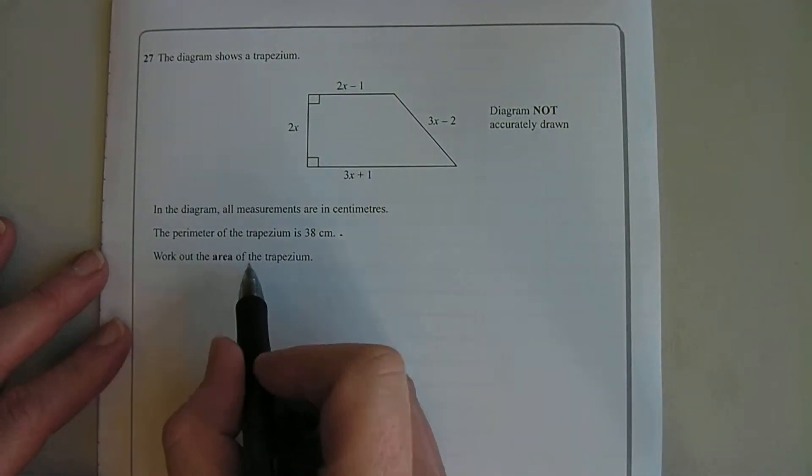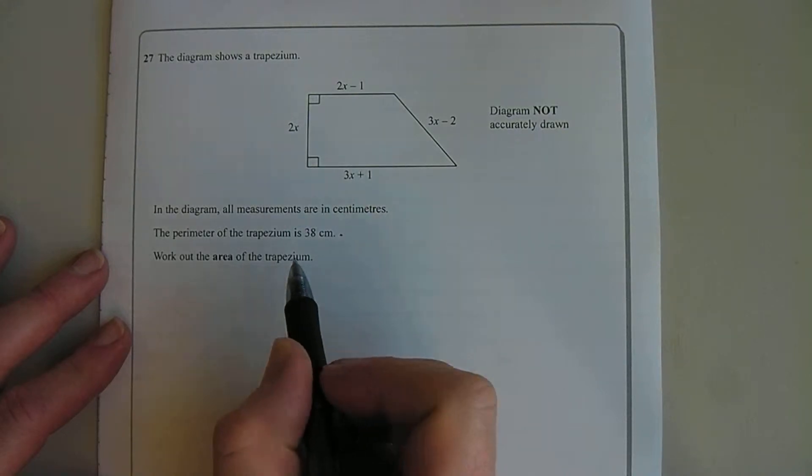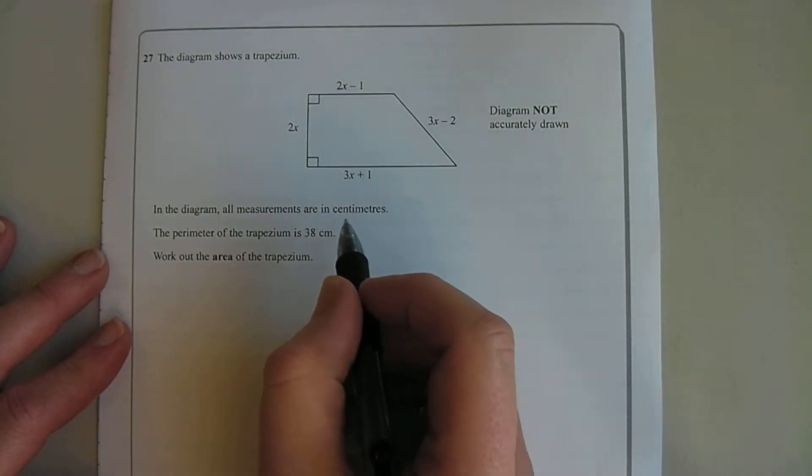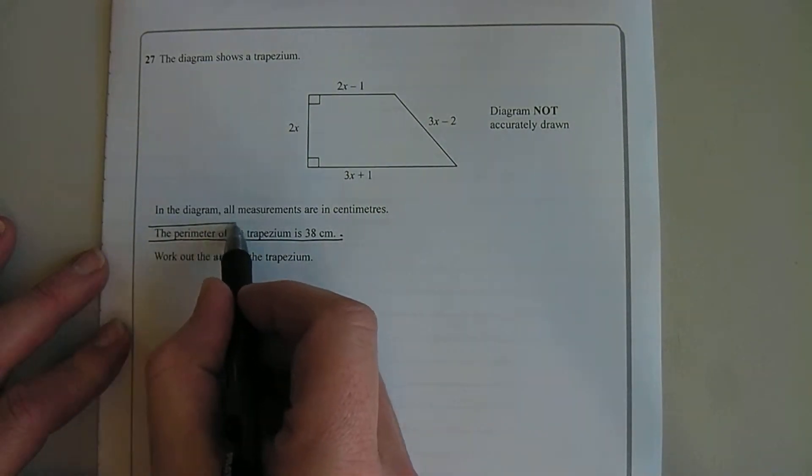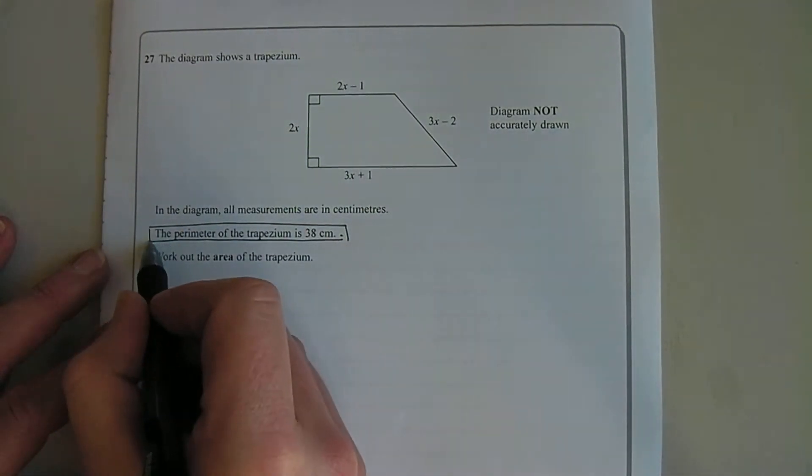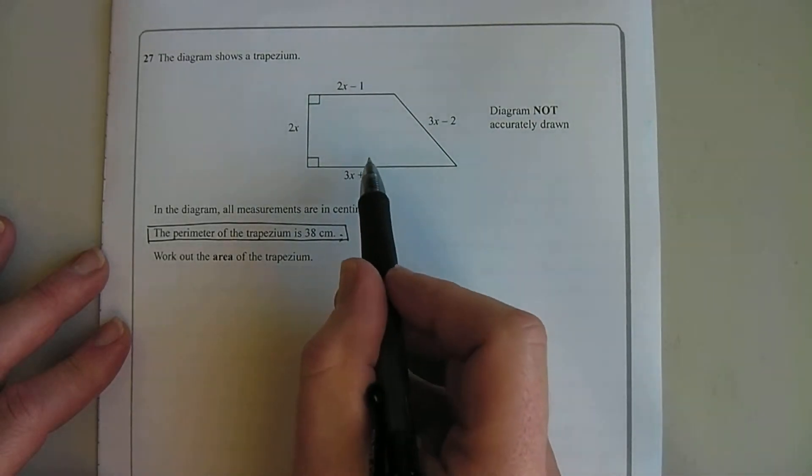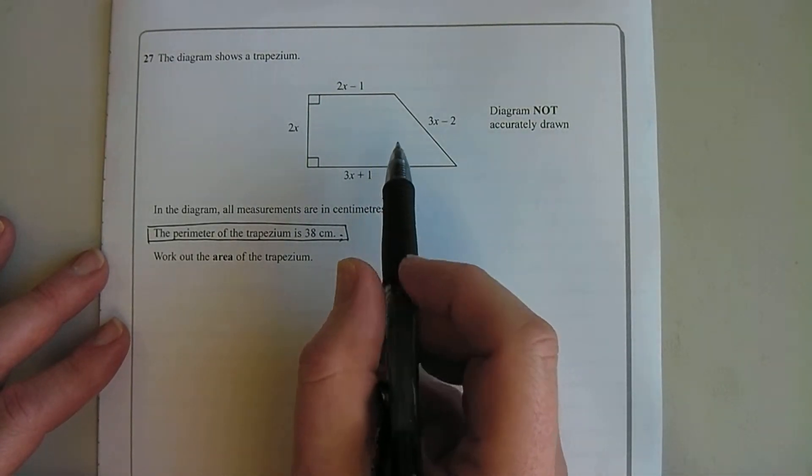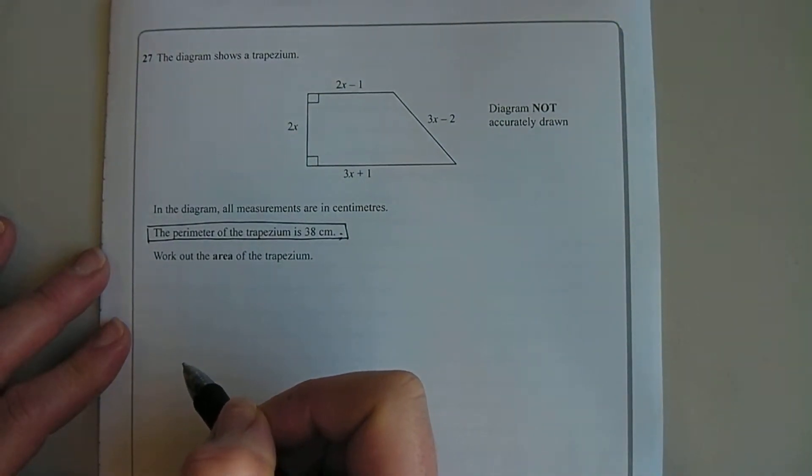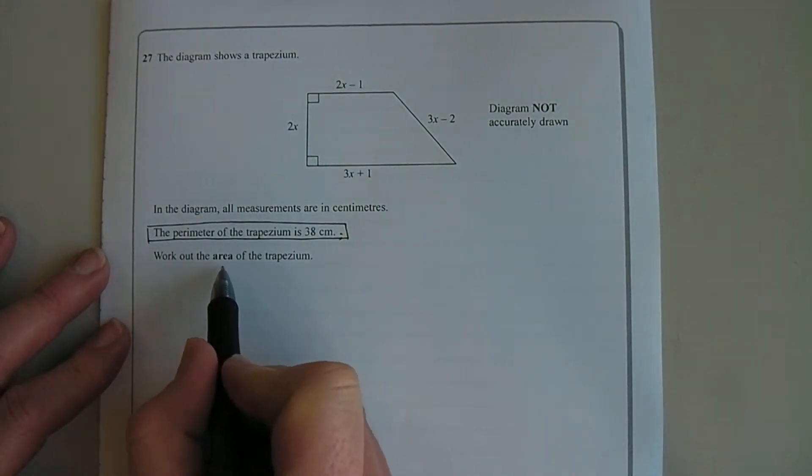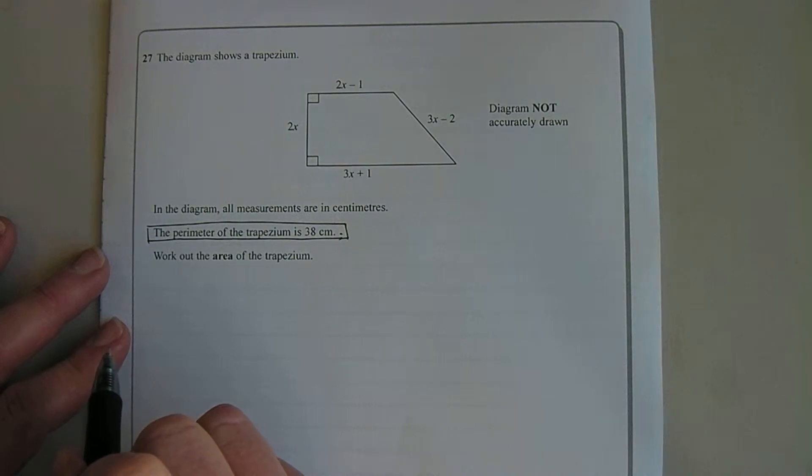So the first step is we're going to have to use this piece of information here to help us work out what x is, and then once we've worked out what x is, we can use the formula for the area of a trapezium to work out the area. And straight away there will be a mark here for making sure we use the correct unit, so that's an easy mark to pick up even if we're struggling with the rest of the question.